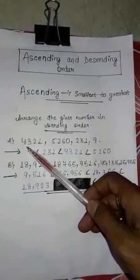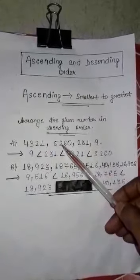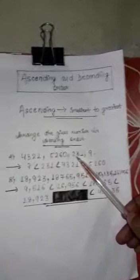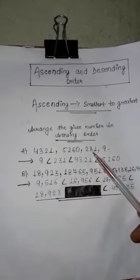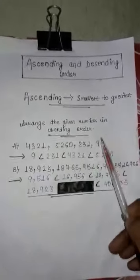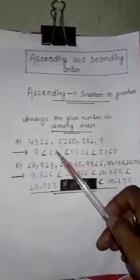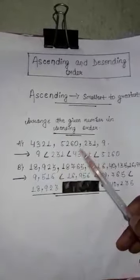This is the question. 4321, 5260, 231, and 9. So which is the smallest? 9. After that, which is bigger? 231. After that, which is bigger?